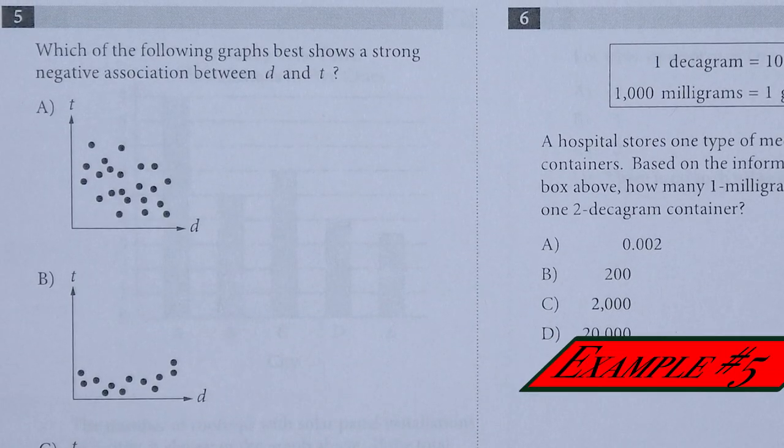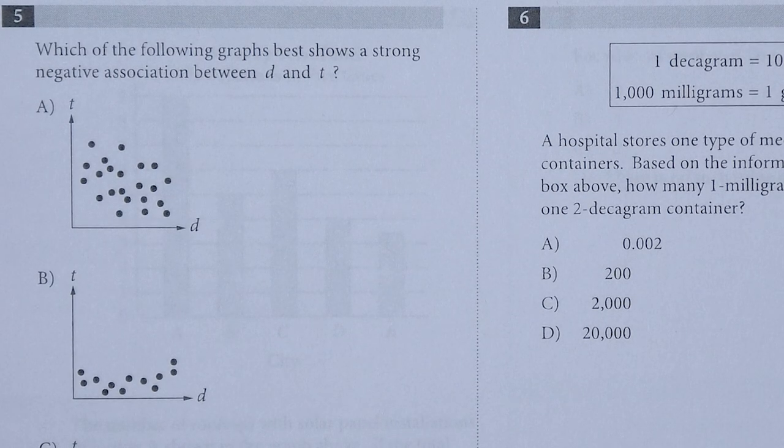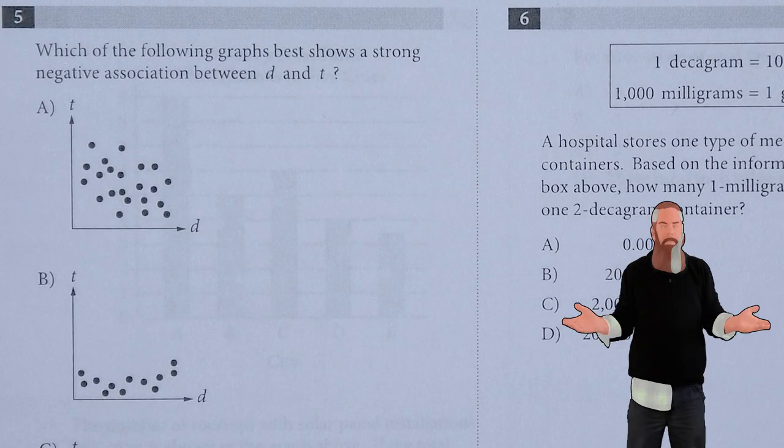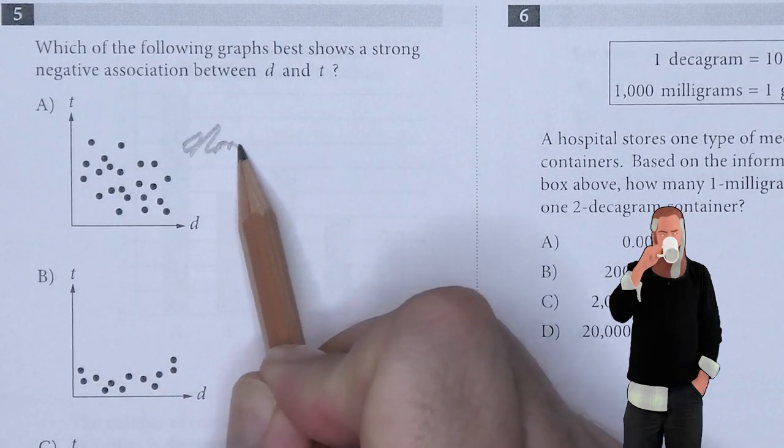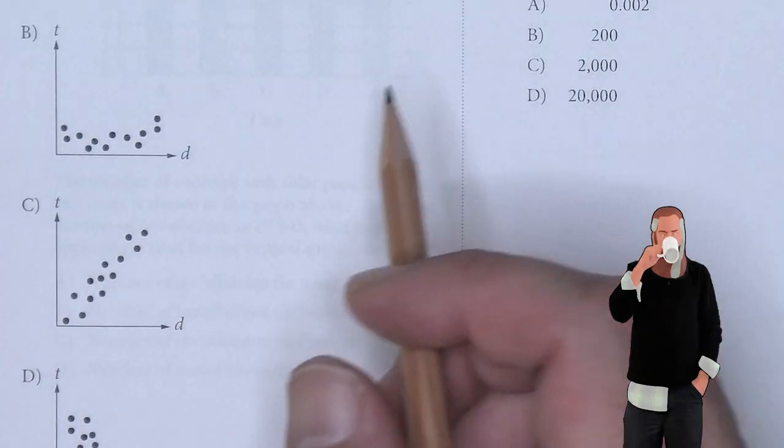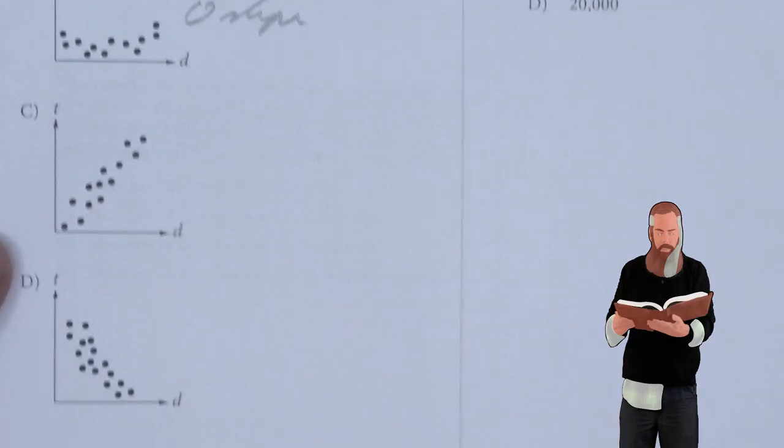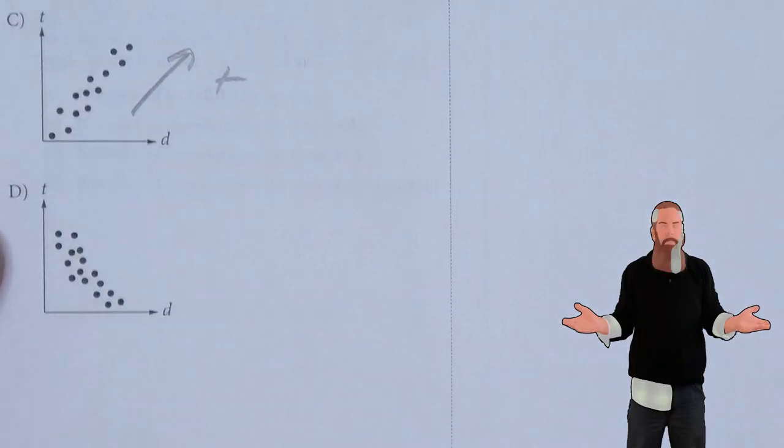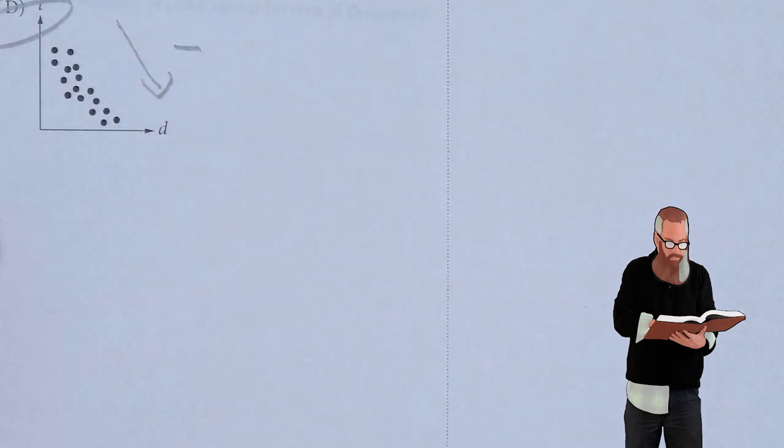Which of the following graphs best shows a strong negative association between d and t? d is the x value and t is the y value. When I look at graph A here, this is no correlation. When I look at this graph, I'm seeing a zero slope, which is not a negative correlation. Looking at C, this is moving up, which means positive correlation. D is moving down, which means negative correlation. So D is the answer.